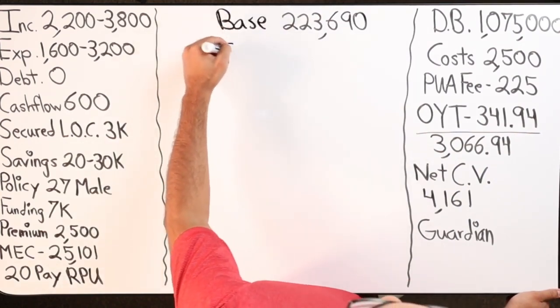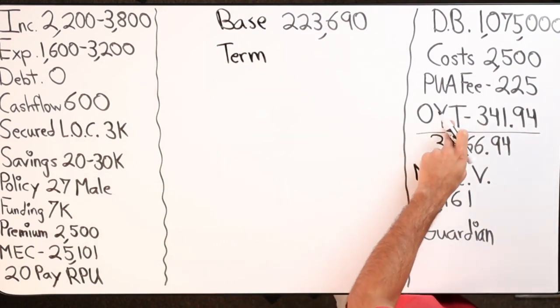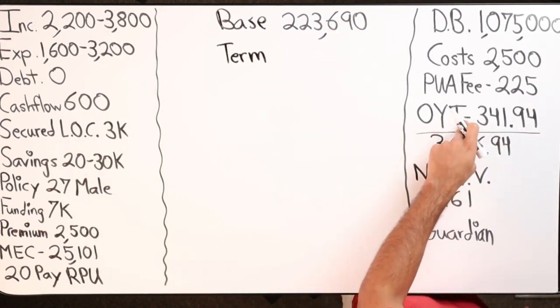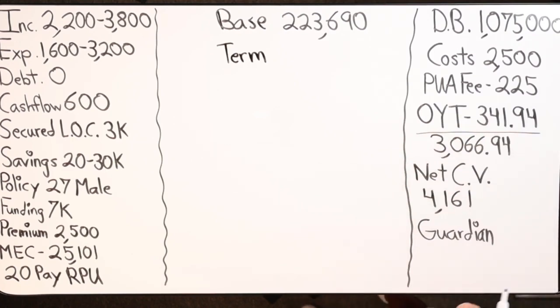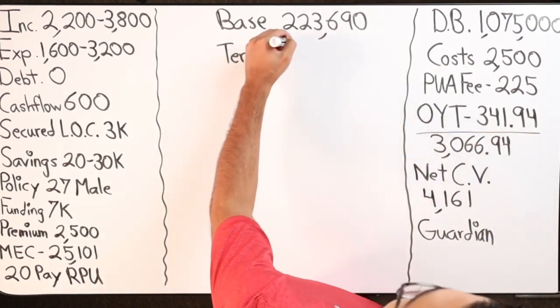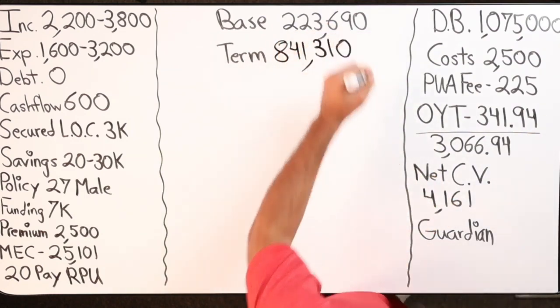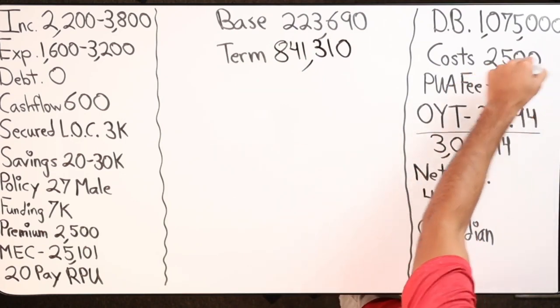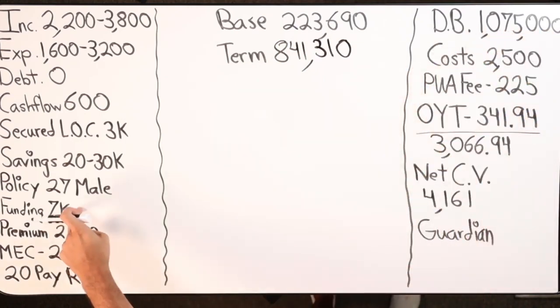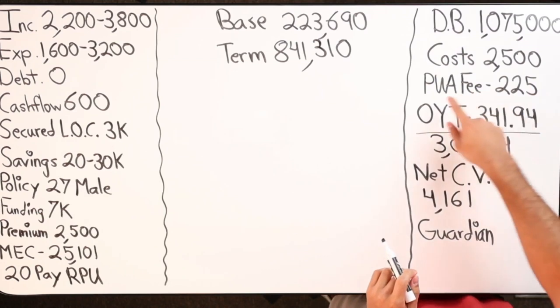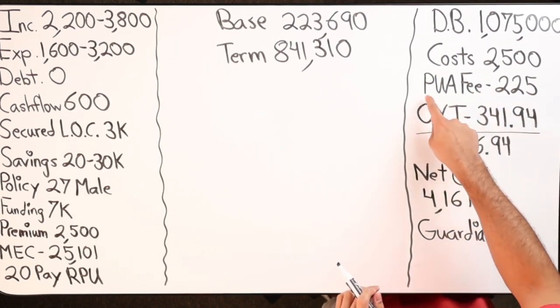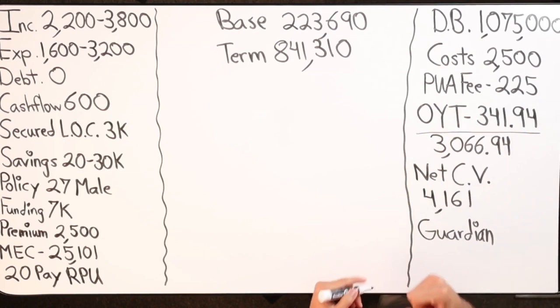And then we have term over here where it says OYT, that stands for one year term life insurance for $341.94. That purchases me $841,310. We've got $2,500 right off the bat that gets minus from the $7,000 that's not going into the cash value the first year. Then we have the PUA fee. This is the paid up addition rider. This is what helps accelerate our cash value growth.